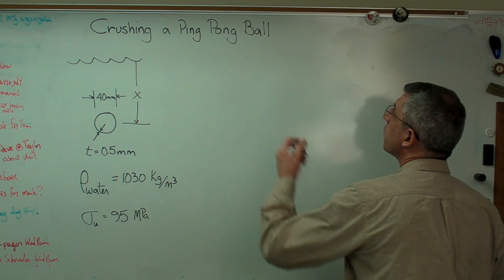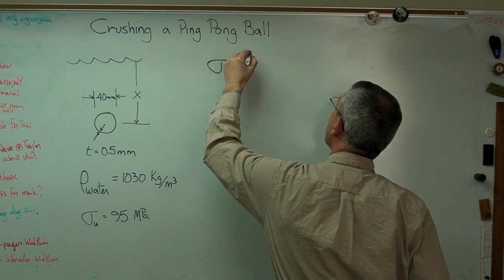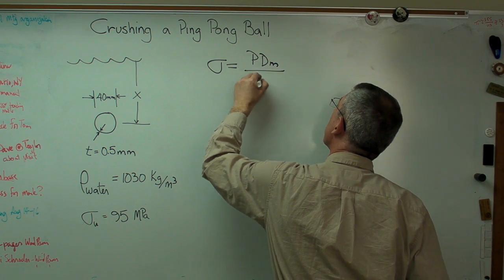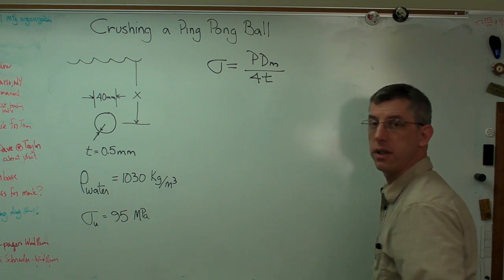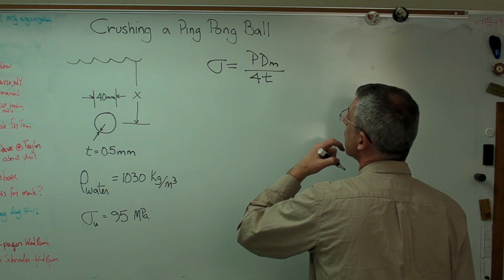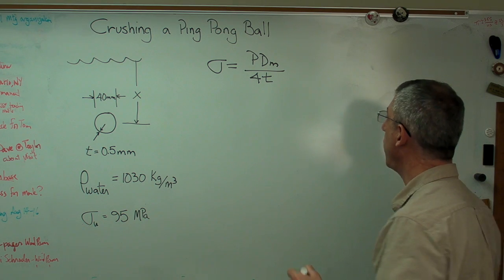The stress on a spherical thin wall pressure vessel is the pressure times the mean diameter over 4 times the thickness. Now this is in your book somewhere. So we know, or we're going to know, everything except pressure. That's what we're trying to find out. So let's solve for that.